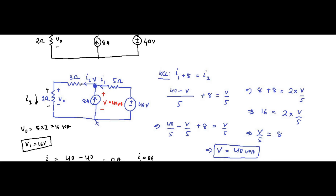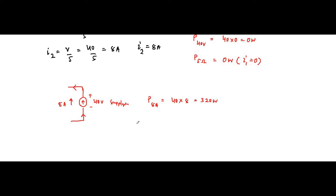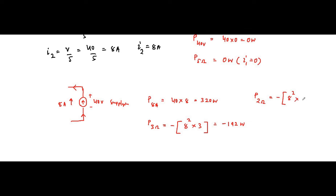Power absorbed by the 3Ω resistor: −I²R = −(8²)(3) = −64 × 3 = −192 watts. Power absorbed by the 2Ω resistor: −I²R = −(8²)(2) = −64 × 2 = −128 watts.